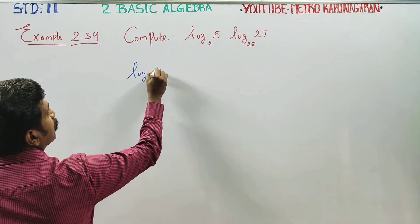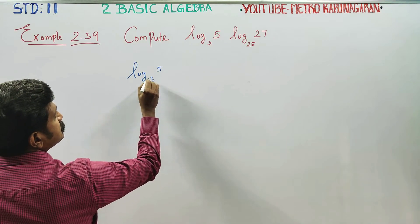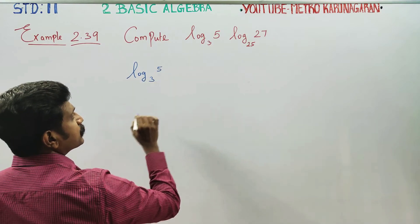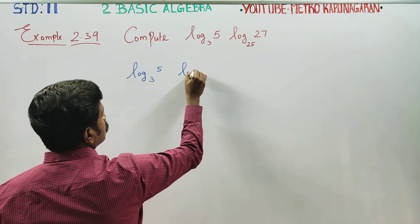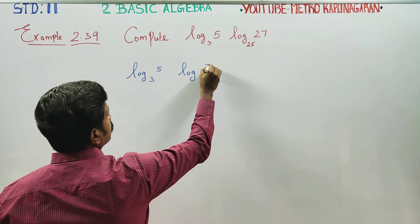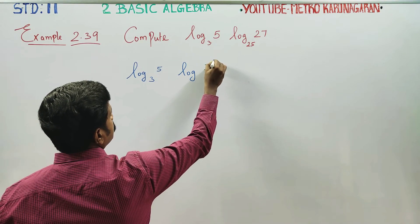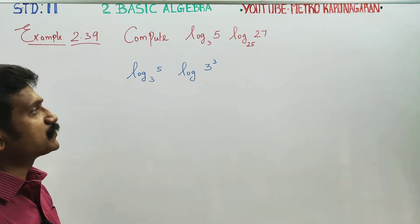Logarithm 5 to the base 3. Logarithm 27 can be written as 3 power 3, because 3 times 3 is 9, and 9 times 3 is 27.